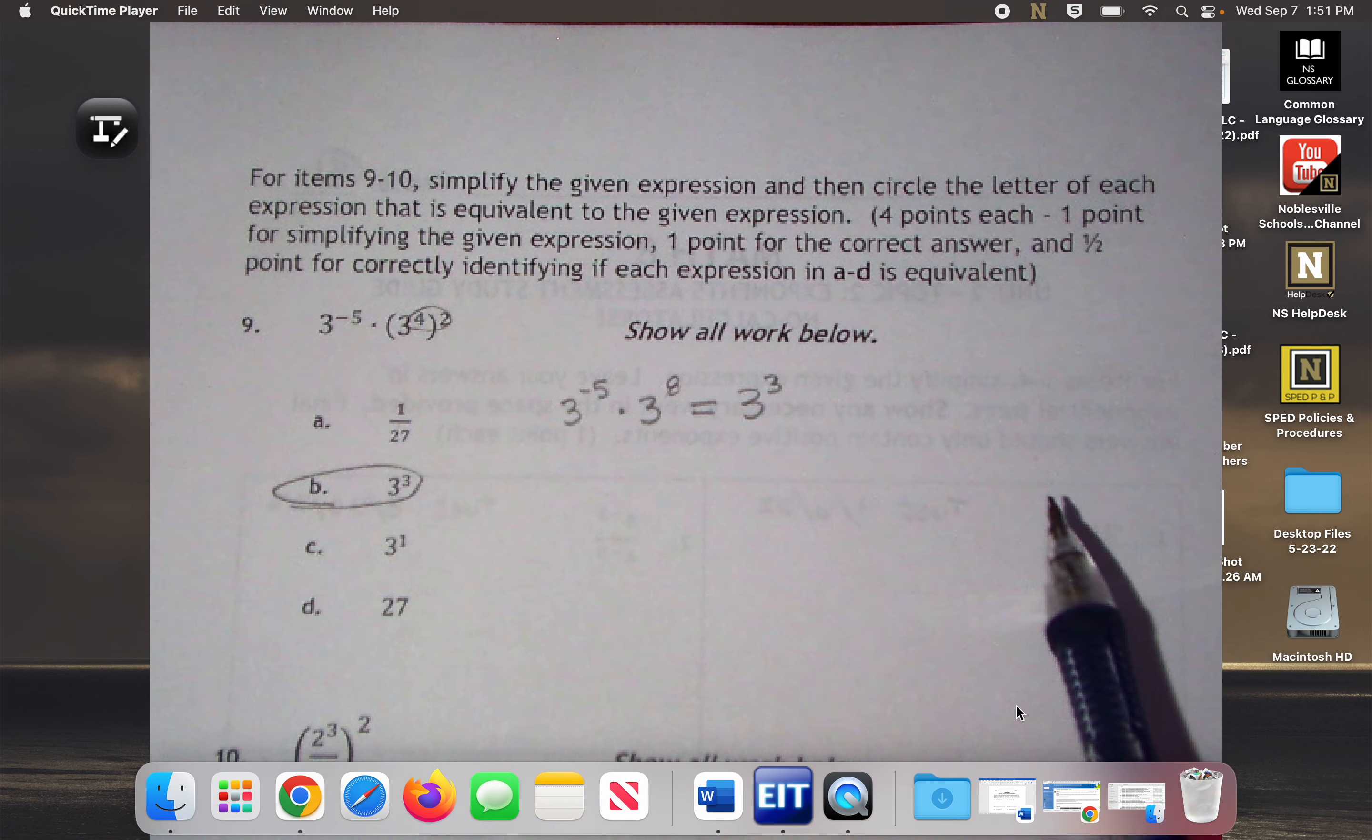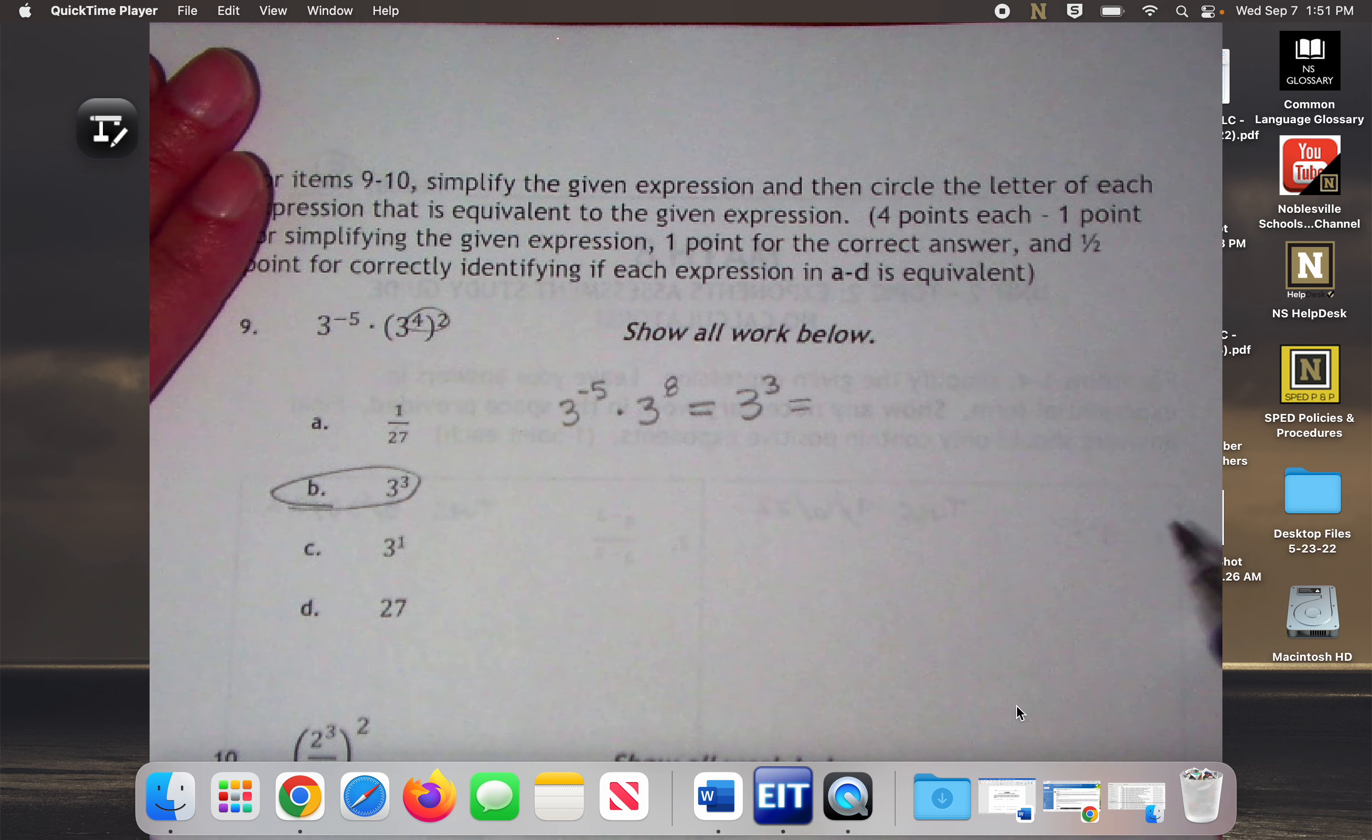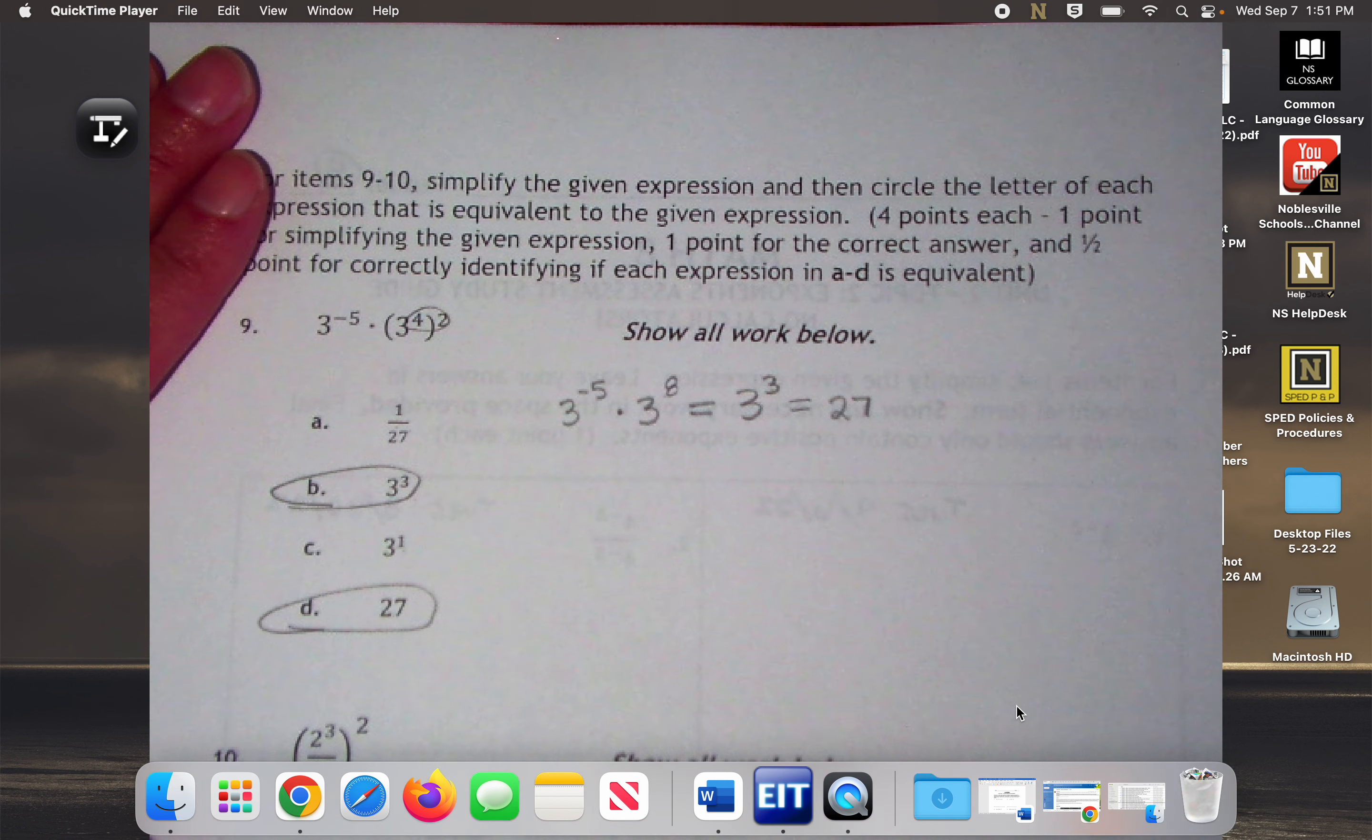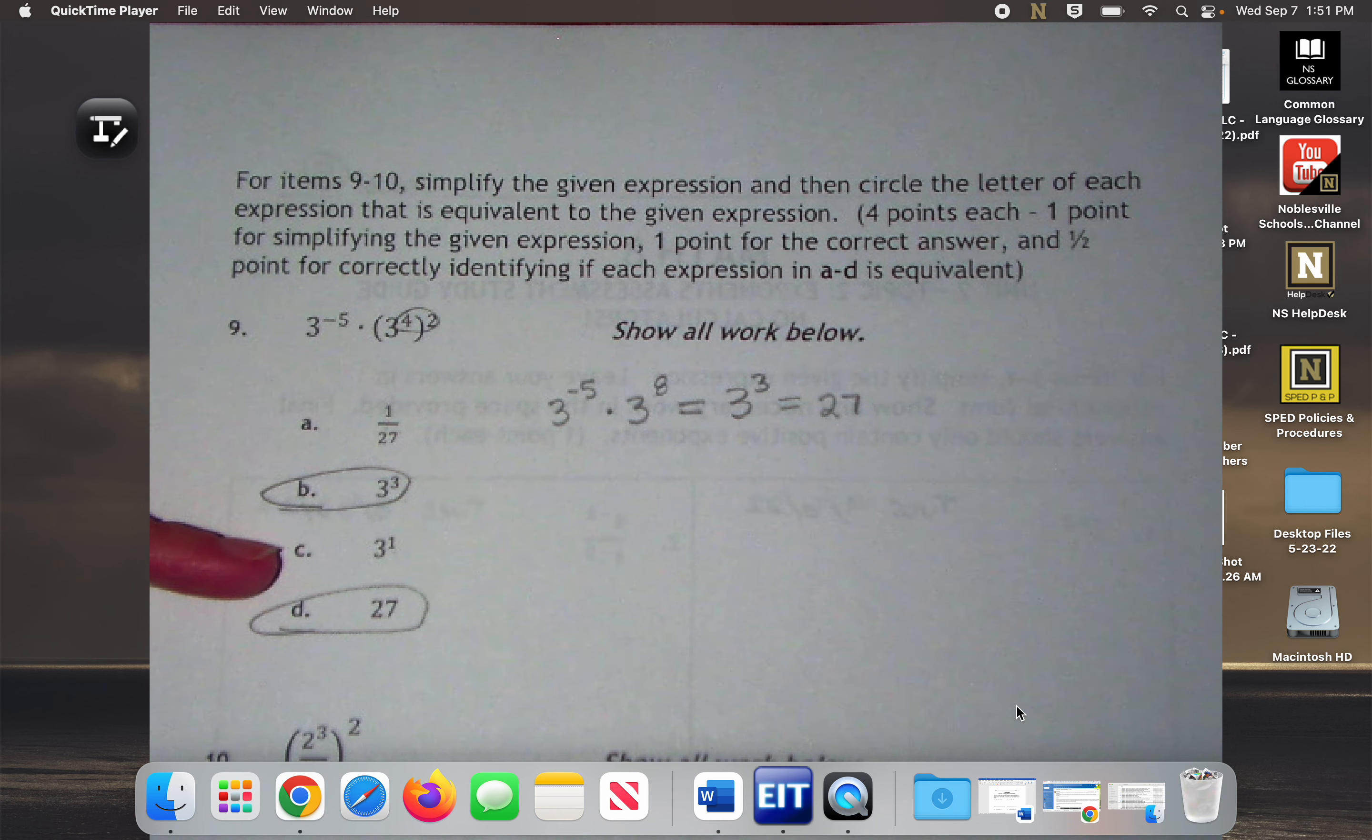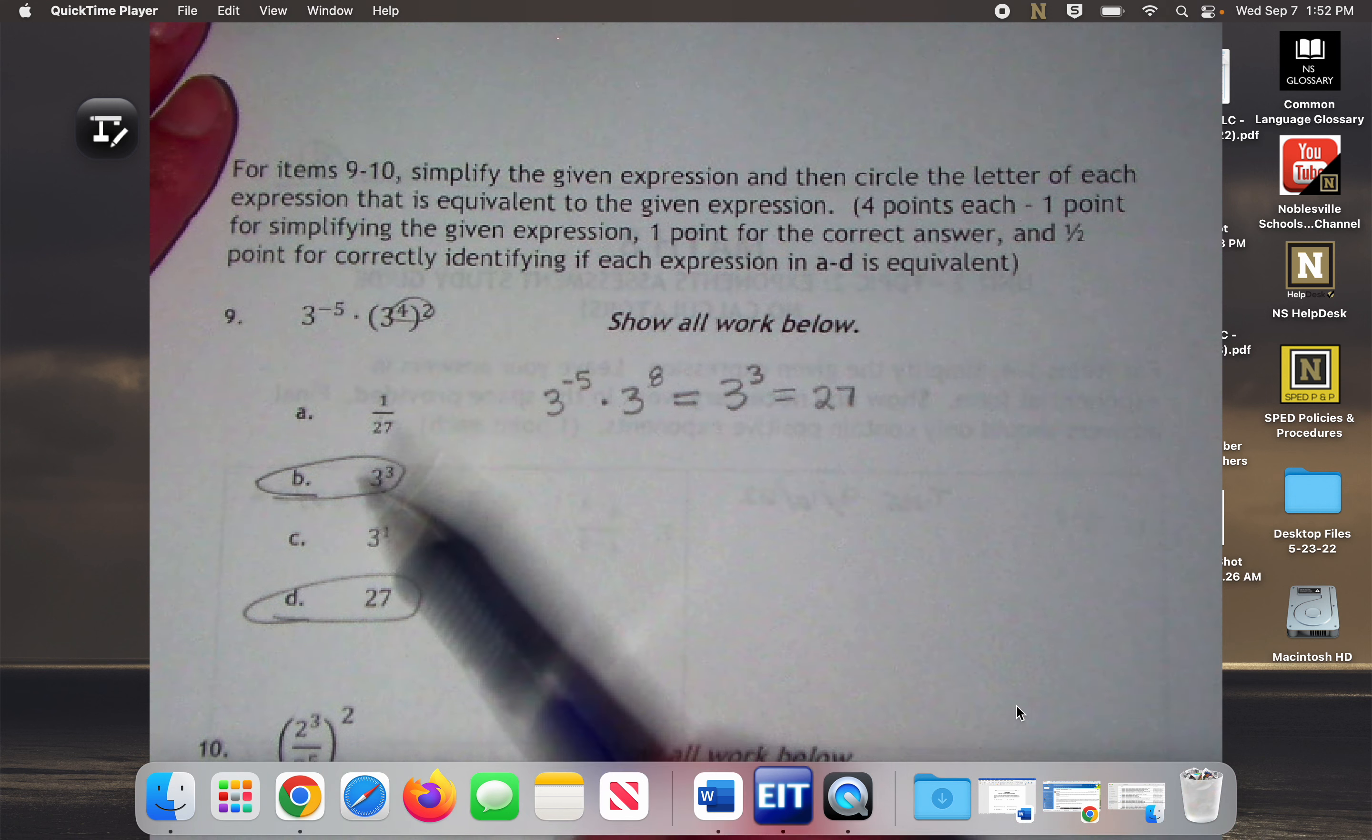What is 3 times 3 times 3? 27. Do we see 27 anywhere in these choices? Yes. So that's what you would do. There is a point for knowing that this shouldn't be circled. There is a point for knowing that this should be circled. Another point for knowing this should not be circled. So each of these is worth a point whether or not you accurately circled or left it alone. So this should be a pretty easy 4 points that you guys can get.